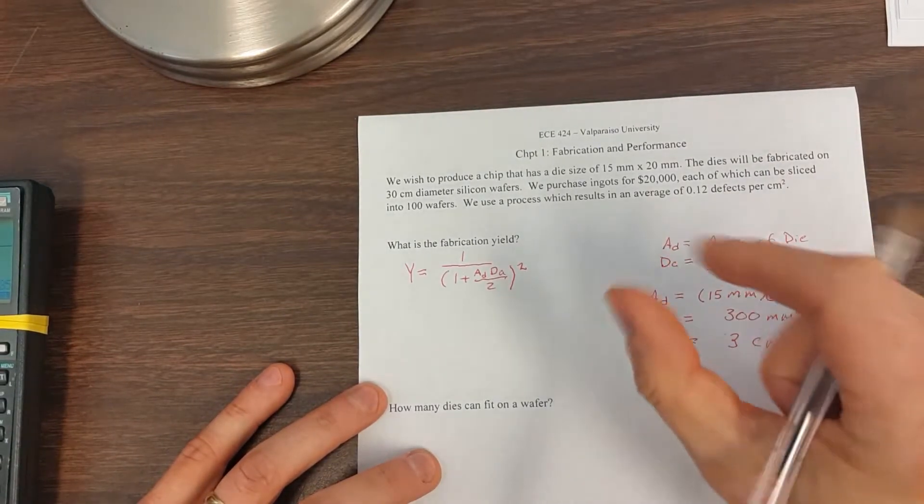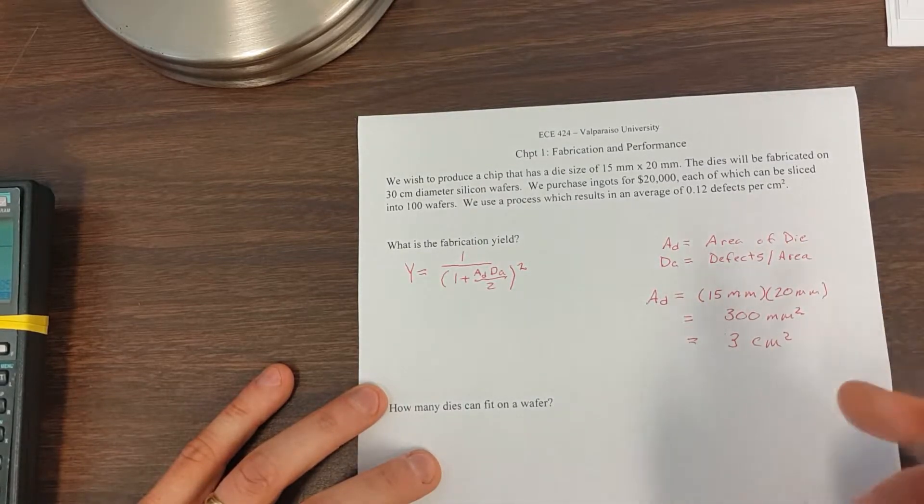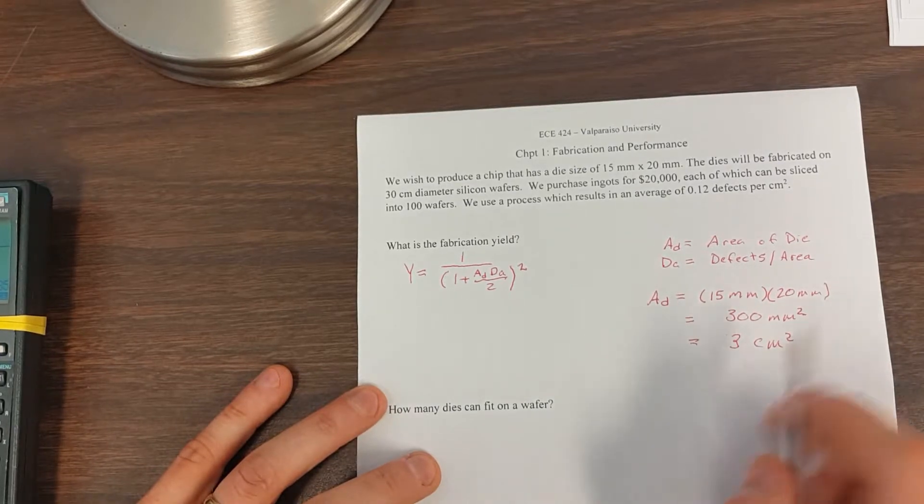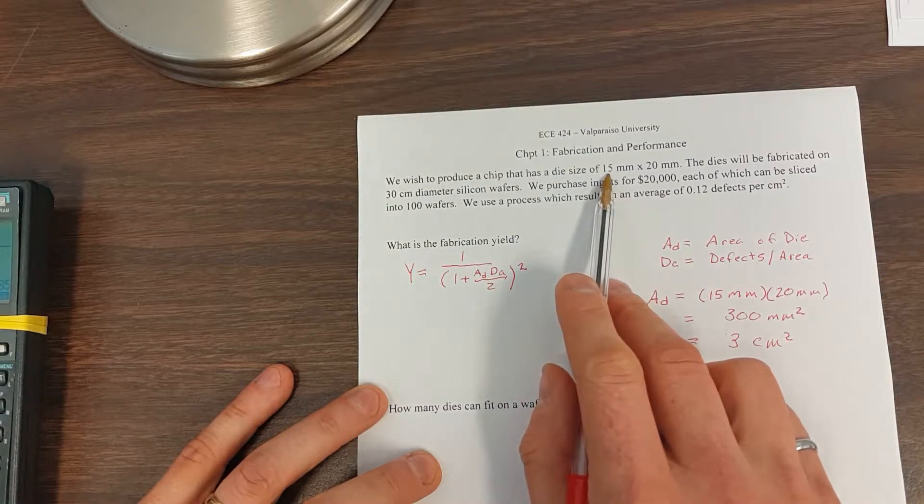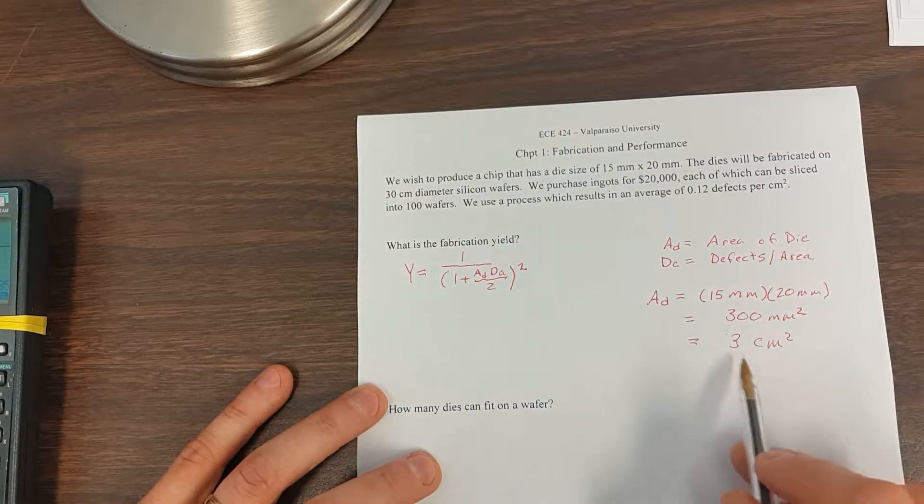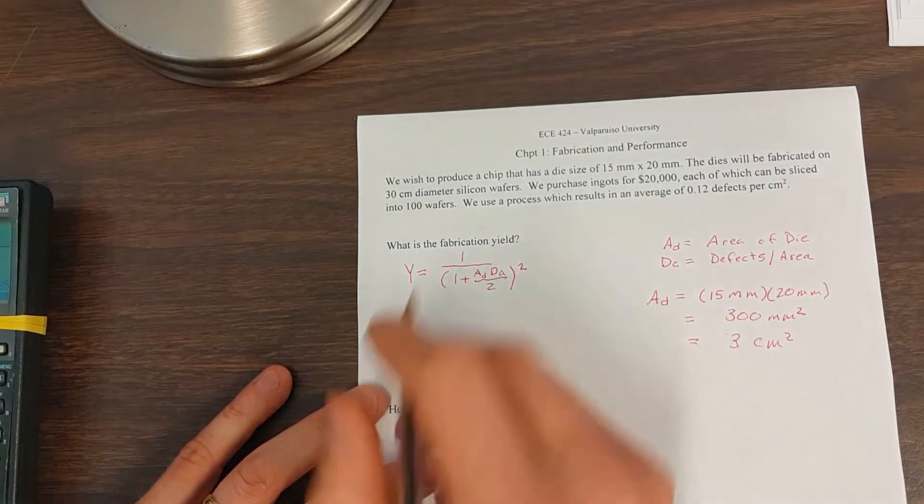So you can kind of think about that, maybe it would be a size about like this, maybe like the face of a big dice or something like that, and so 3 centimeters squared, and that makes sense. So we've got 1.5 centimeters times 2 centimeters, that's going to give us an area of 3 centimeters squared. So let's plug this in.